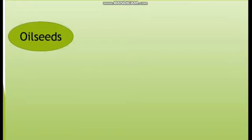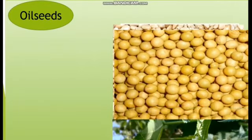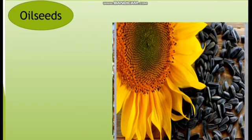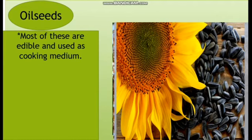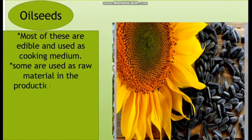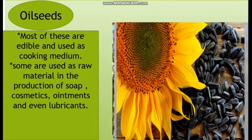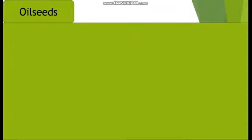India started the Yellow Revolution to increase edible oil production. The main oil seeds produced in India are groundnuts, mustard, coconut, sesame, soybean, castor seeds, linseed, cotton seeds, and sunflower. Most of these are used as cooking mediums, but some are also used as raw material in the production of soap, cosmetics, ointments, and lubricants. Oil seeds in India cover approximately 12 percent of the total cropped area of the country. The number one oil seed crop of India is groundnut, accounting for about 50 percent of all oil seeds produced.